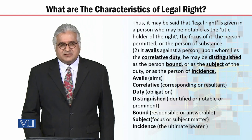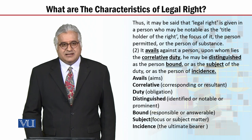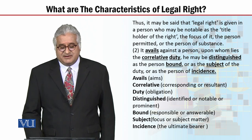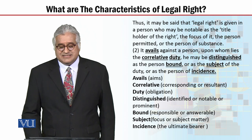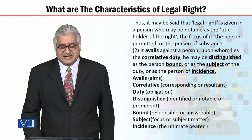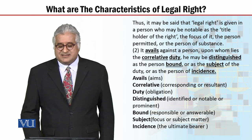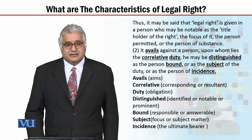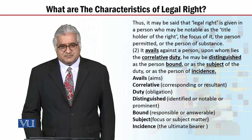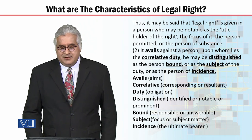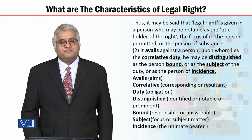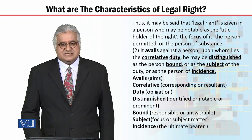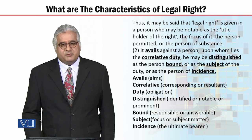The second characteristic hai ke legal right avails against a person upon whom lies the correlative duty. He may be distinguished as the person bound, or as the subject of the duty, or as the person of incidence. Yeh jo doosra characteristic hai, ismein bhi technical terminologies hain, aayye unko bhi discuss kar leen. 'Avail' ka matlab hai aims. 'Correlative' ka matlab hai corresponding or resultant duty. 'Duty' ka matlab hai obligation. 'Distinguished' ka matlab hai identified or notable or prominent.